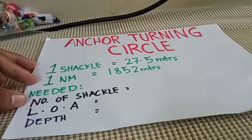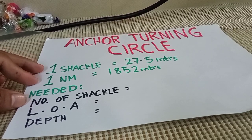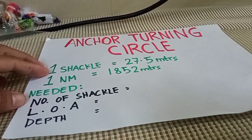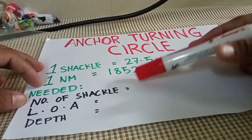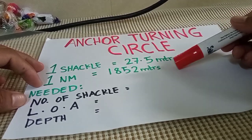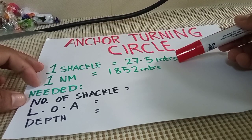I want to teach you how to compute the anchor turning circle. So we know that one shackle is equivalent to 27.5 meters and one nautical mile is equivalent to 1852 meters. So we are going to use this later. So next,